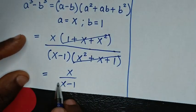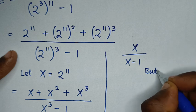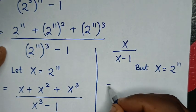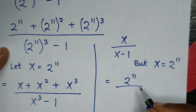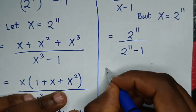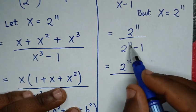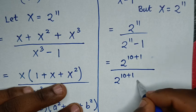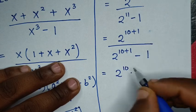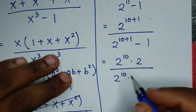So we have x over x minus 1. Before finishing, recall that x equals 2 power 11. Substituting back, it becomes 2 power 11 over 2 power 11 minus 1. Now 2 power 11 is the same as 2 power 10 plus 1, which equals 2 power 10 times 2 power 1, which is 2. So the expression is 2 power 10 times 2 over 2 power 10 times 2 minus 1.